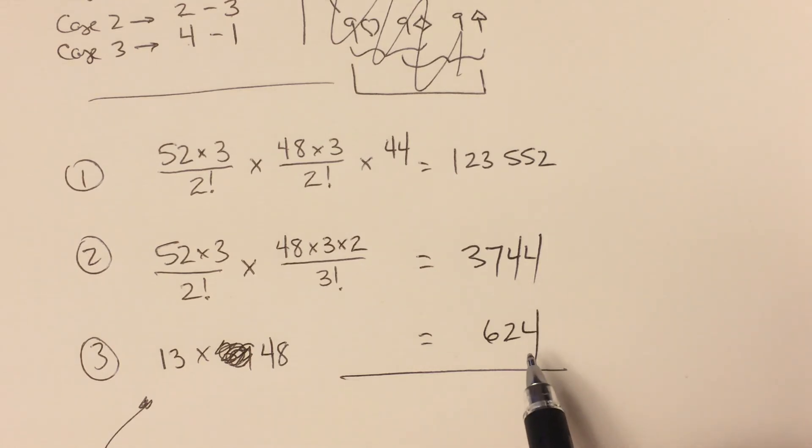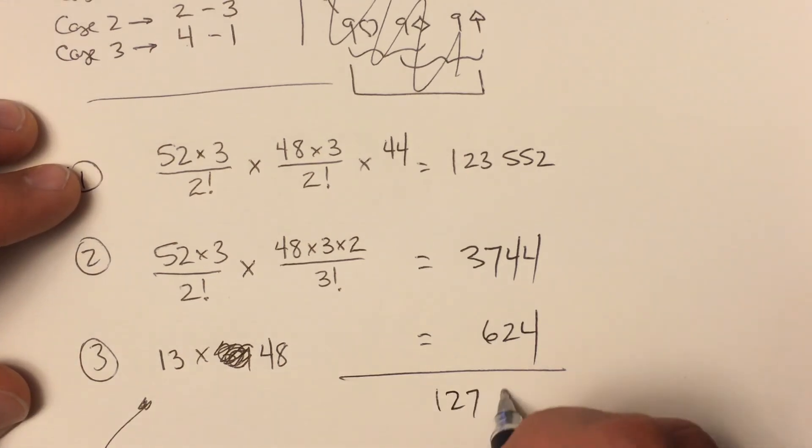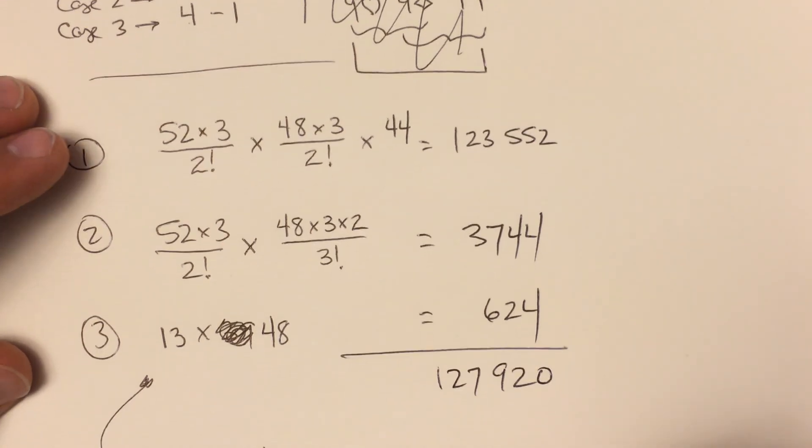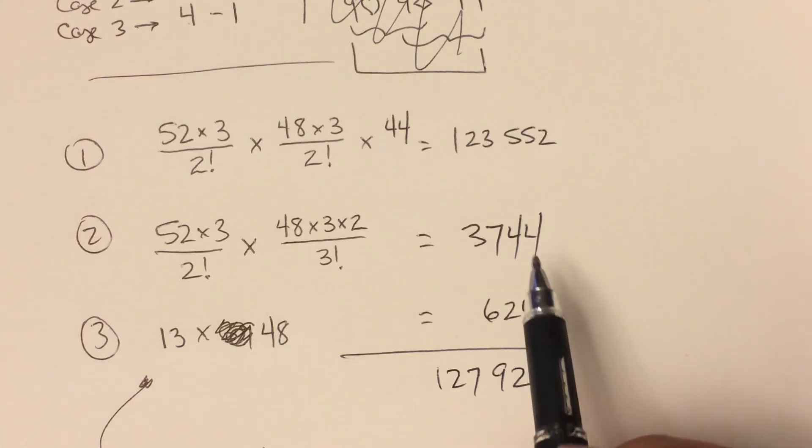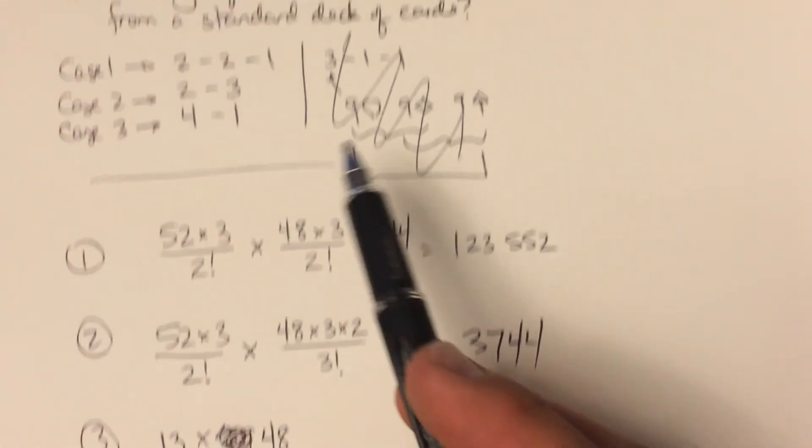123,552 plus 3,744 plus 624 is 127,920 total hands if we're counting all of these three different cases.